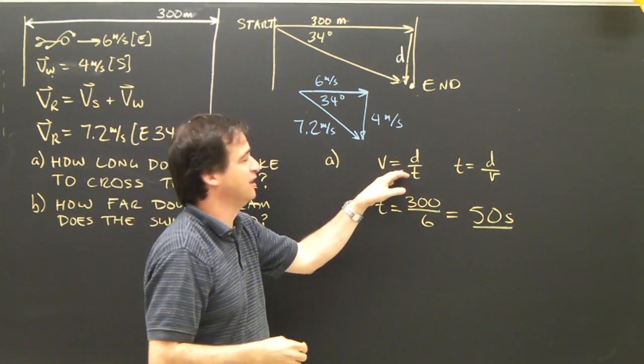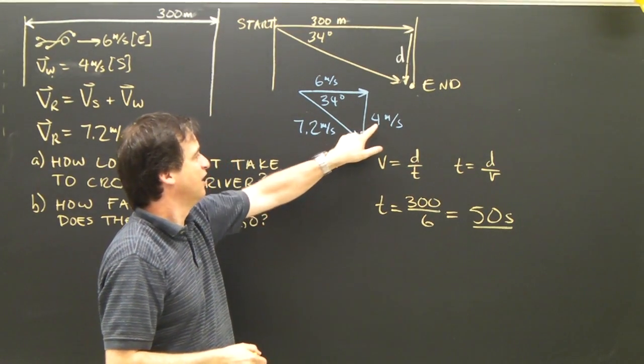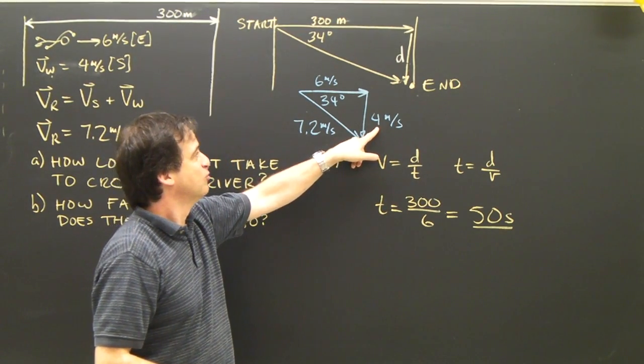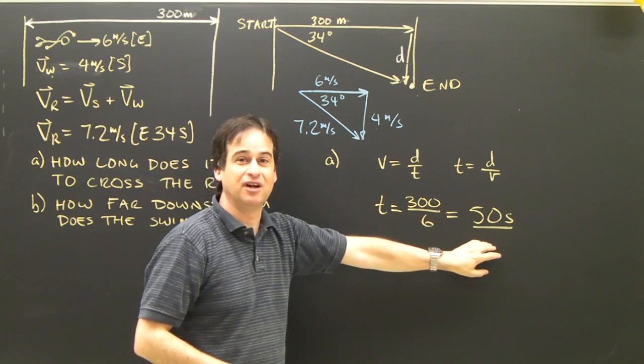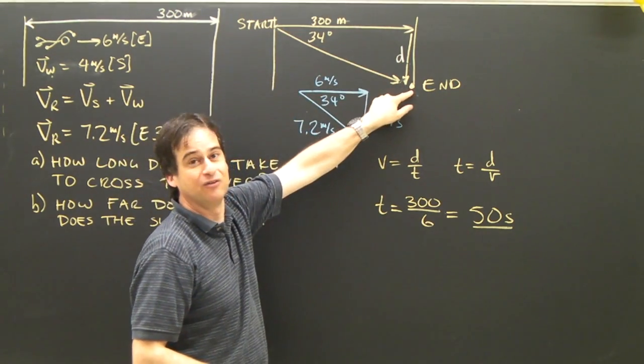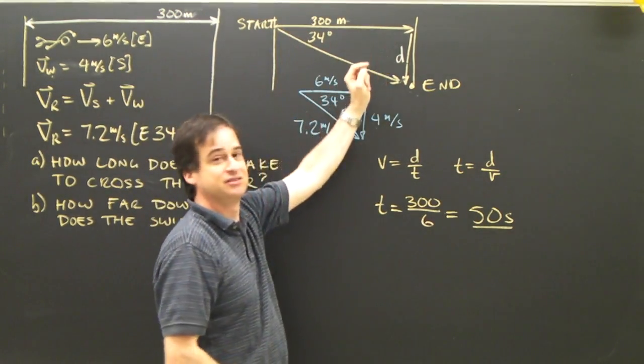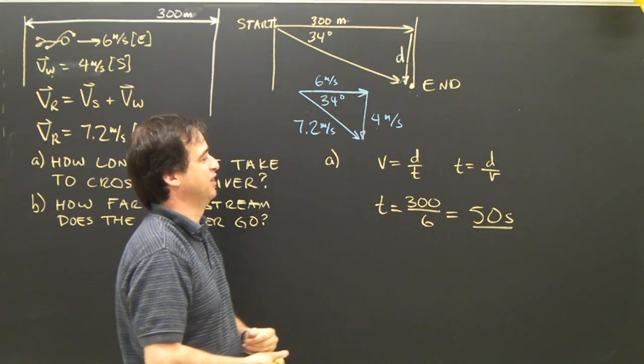But again, if I use this formula, I need two pieces of information. I've got the velocity. What I need is something else, and that would be the time. The time it takes the swimmer to go from here to here is the time it takes to cross, and is the time the swimmer is going downstream.